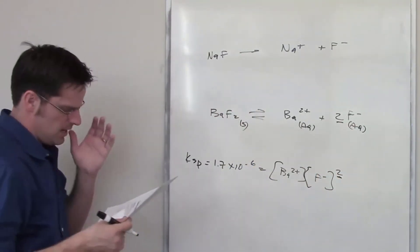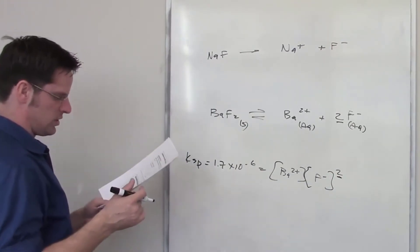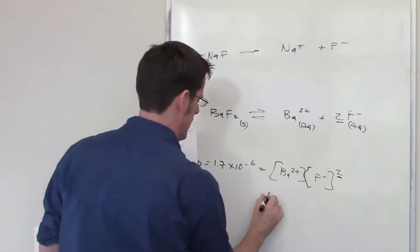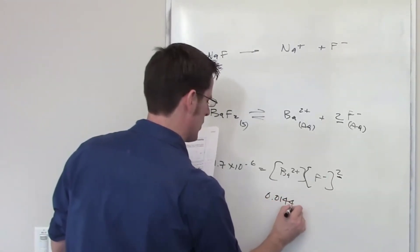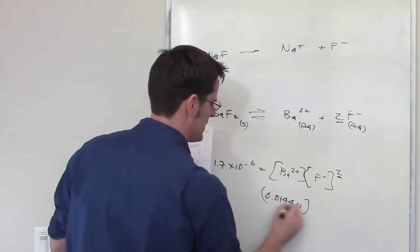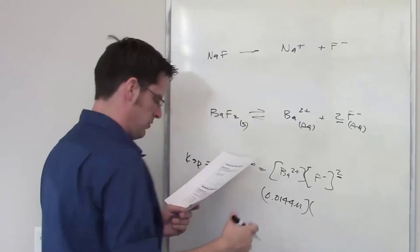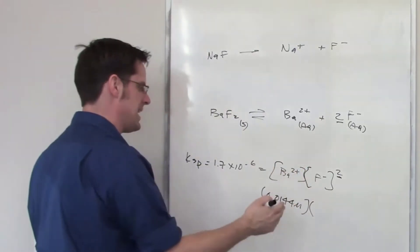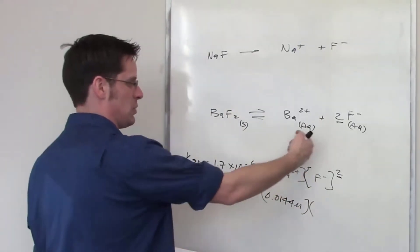Now it also tells me what the equilibrium concentration of barium 2 plus is. It gives me that number as being 0.0144 molar. So I have this number here already. Furthermore, it's asking me what the value of F minus has to be in order to get precipitation to occur.